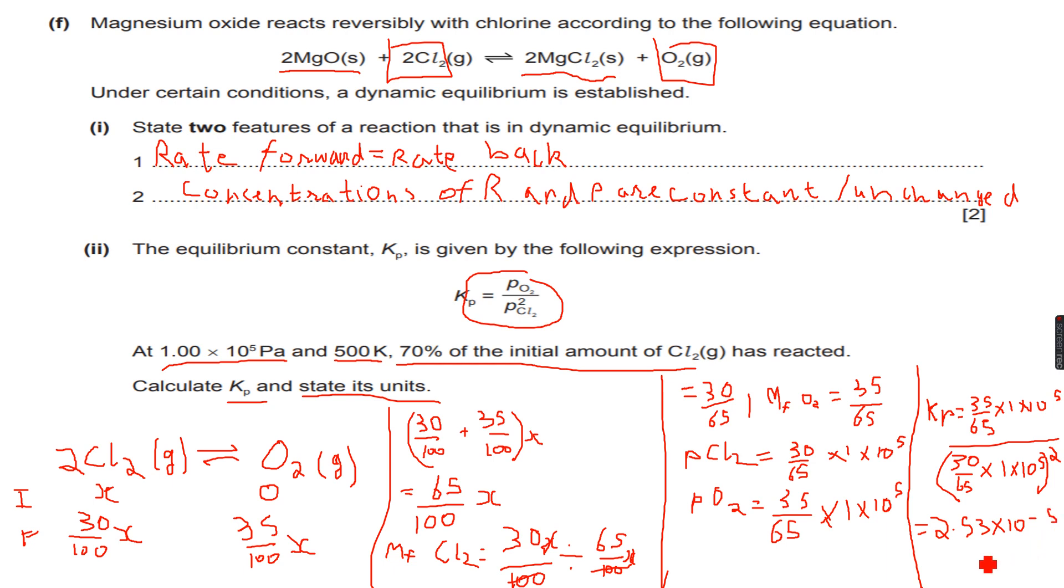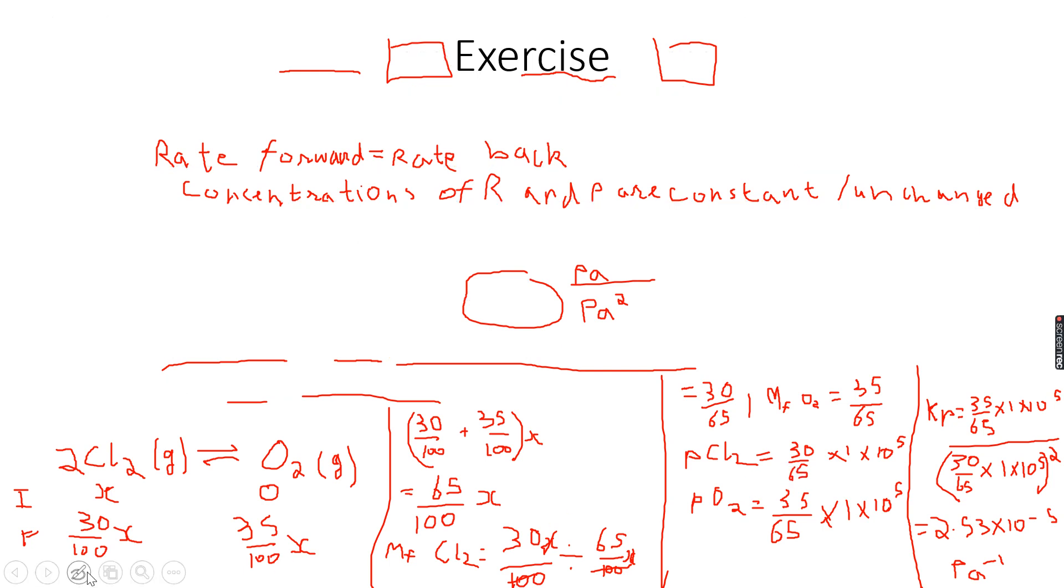So this is the value of my Kp, and it says that calculate Kp and state its units. So I have calculated the value of Kp, now the units. For the numerator, the units are Pascals because the partial pressure is in Pascals. In the denominator, it is Pascal squared because it is the square of the partial pressure. So Pa over Pa squared will give me Pa to the power of minus 1, or per Pascal, which is same as Pa to the power of minus 1. So Pa to the power of minus 1 will be my unit, and 2.53 into 10 to the power of minus 5 will be my value of Kp. And that's how we calculate Kp. So let's move to the next example.